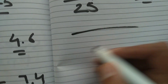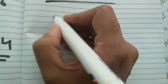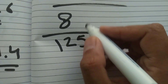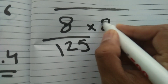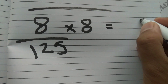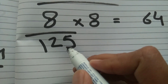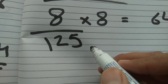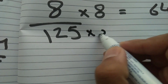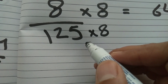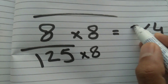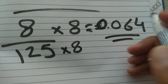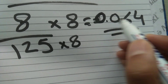Now let's divide by 125. Say I have 8 divided by 125. For 125, you always multiply the top value by 8. Since 125 multiplied by 8 equals 1000, you move the decimal three places back — one, two, three. So 8 multiplied by 8 is 64, and placing the decimal gives 0.064. That's the answer.